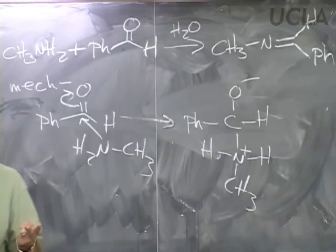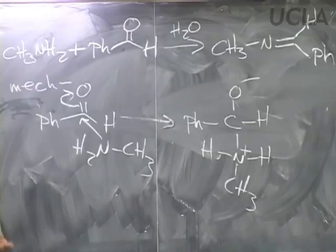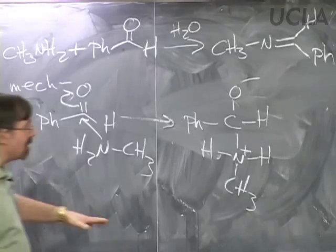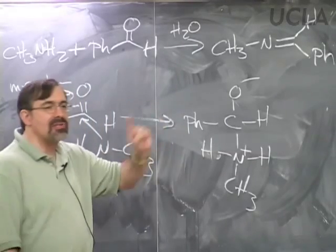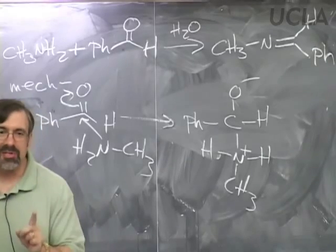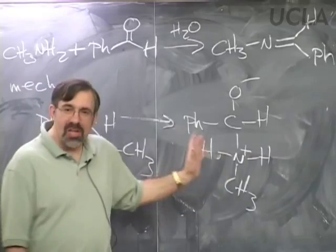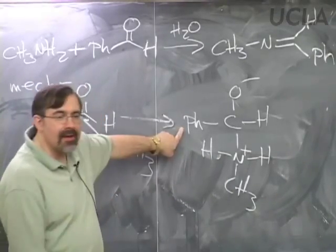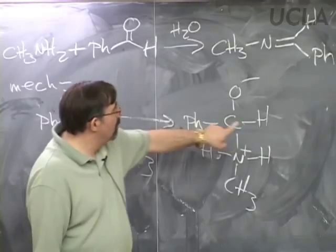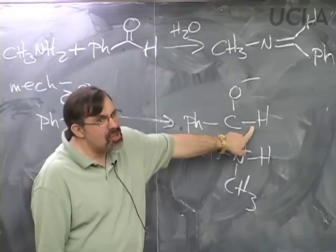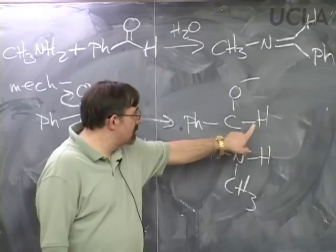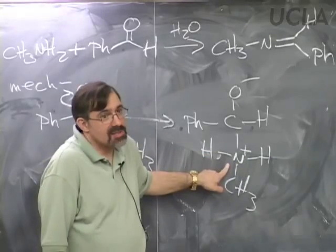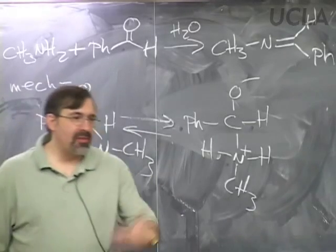So when a tetrahedral intermediate can't kick out a useful leaving group, the other thing it does is accept a proton. Which acid do we protonate with? There's actually a stronger acid present—an ammonium salt is a stronger acid. But we can't do a 1,3-proton shift directly. If you can't take it directly and still need to move that proton away, you use the proton bus. Water works as the bus. It doesn't really matter whether I put the proton on the O minus or take it away from the NH-plus first—I'm going to protonate the oxygen first.